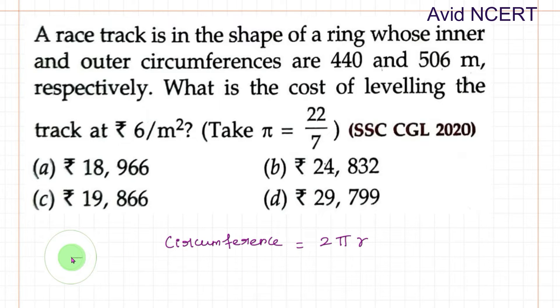For the inner circle, we take small lowercase r and for the outer circle, we take the uppercase R. The inner circumference is 440 meters, so 2πr equals 440 meters, and the outer circumference is 506, so 2πR equals 506 meters. From this data, we can find the value of both radii.